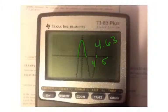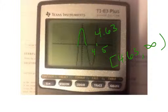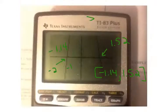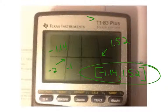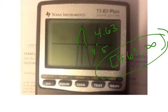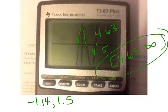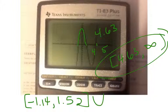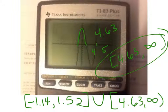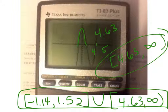So part of the answer is bracket negative 1.14 comma 1.52 bracket — I use brackets because the original inequality was greater than or equal to; if it had just been greater than, I would have used parentheses. Now I have to go back and find where that other part of the graph hits the x-axis. That gives me bracket 4.63 comma infinity parenthesis. So the full answer written in interval notation is [−1.14, 1.52] union [4.63, ∞).